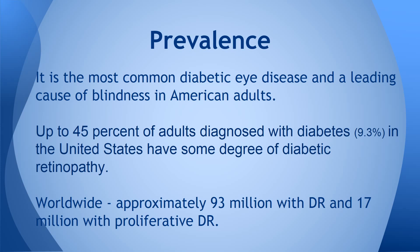Worldwide, the data was vague at best. A lot of that has to do with people not understanding what to look for, and there are only small data samples from small portions of different countries. The most reliable estimate I found was about 93 million people worldwide with DR, and then 17 million with proliferative DR.